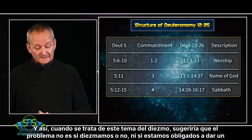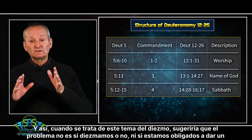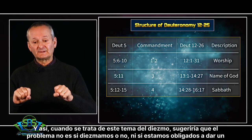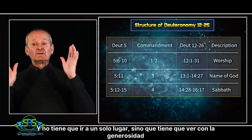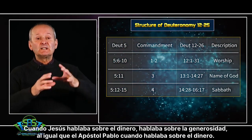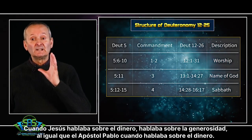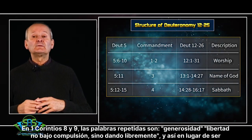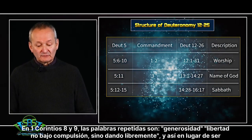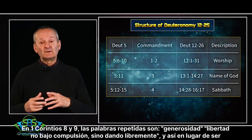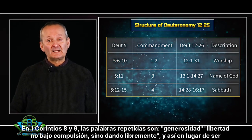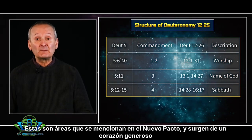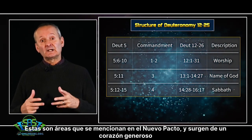When it comes to the tithing issue, I would suggest the question is not whether we are obligated to give a tenth of our income and wrestle with whether it's before or after tax and whether it has to go to one location — but rather it has to do with generosity. When Jesus spoke about money, he spoke about generosity. When the Apostle Paul spoke about money — especially in 2 Corinthians 8 and 9 — the repeated words are generosity, freedom, not under compulsion, but giving freely. Rather than doing a mathematical calculation, we should be generous in our giving: supporting the local church, supporting missions, and caring for the poor and needy. These are areas mentioned in the New Covenant, coming out of a heart of generosity.